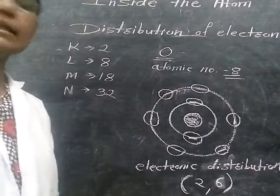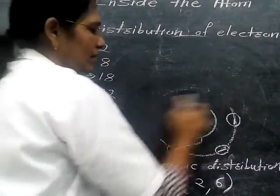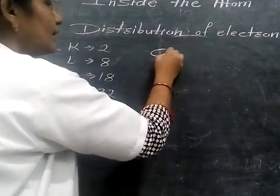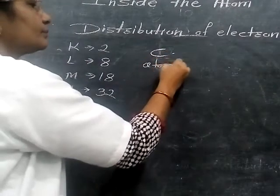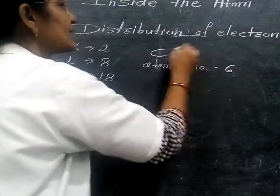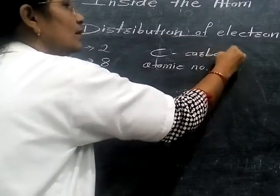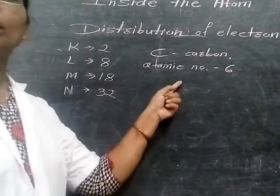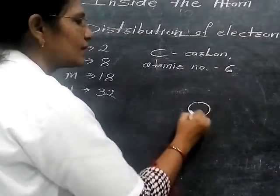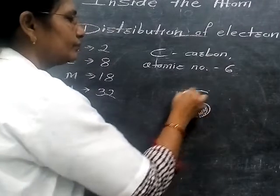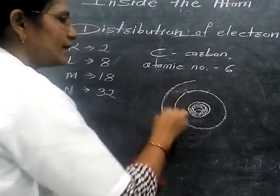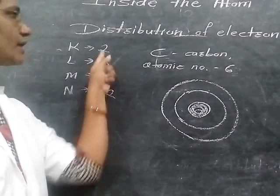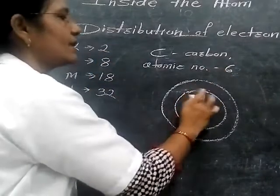Similarly, let us take another example. Suppose we take the example for carbon. We know that the atomic number of carbon is 6. Now, we draw the electronic distribution for carbon. This is the nucleus of the carbon atom. In the first orbit, the capacity is 2 electrons, so we put 2 electrons in the first orbit.